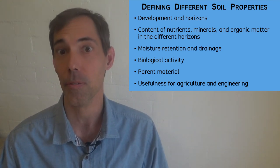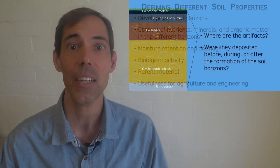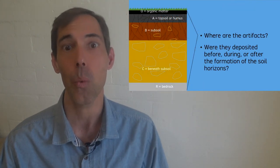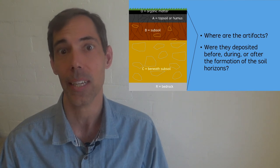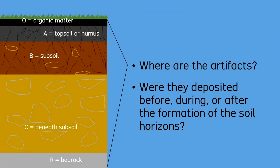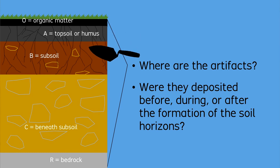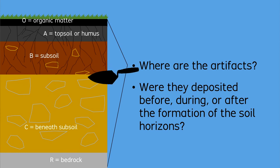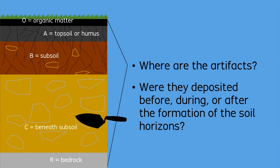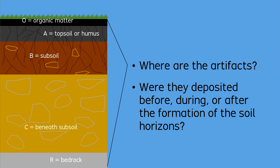Most important for archaeology is to understand the process of how and when a soil profile came to exist. If you can understand this process, then you can situate a specific archaeological layer within the context of what happened before, during, and after the deposition of artifacts into the sediment of an ancient living surface. The original surface of course has changed with the accumulation of more sediment, concurrent with ongoing soil development.